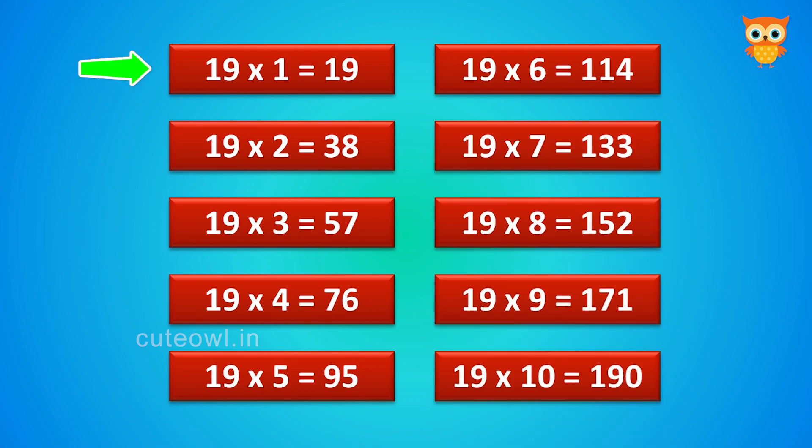19 ones are 19. 19 twos are 38. 19 threes are 57.